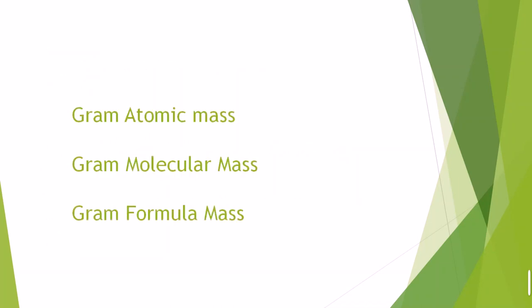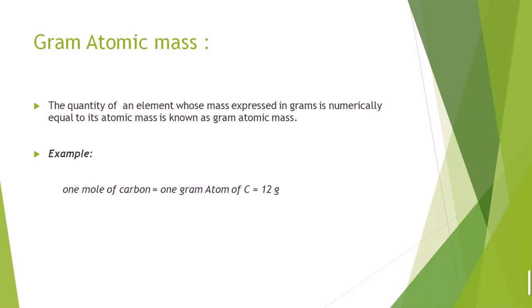Now we discuss three important formulas derived from the mole concept: gram atomic mass, gram molecular mass, and gram formula mass. Gram atomic mass is the quantity of an element whose mass expressed in grams is numerically equal to its atomic mass. For example, 1 mole of carbon equals 1 gram atom of carbon — the atomic mass of carbon is 12. For hydrogen it is 1.008 grams, and for carbon it is 12 grams.